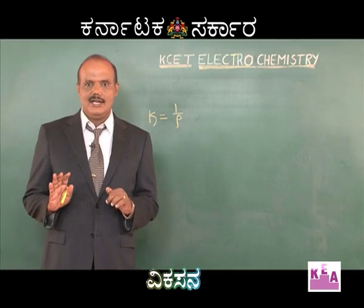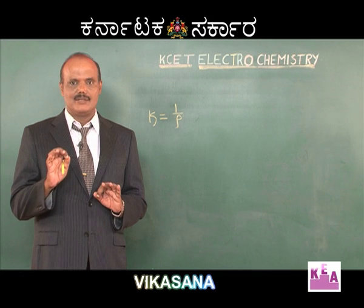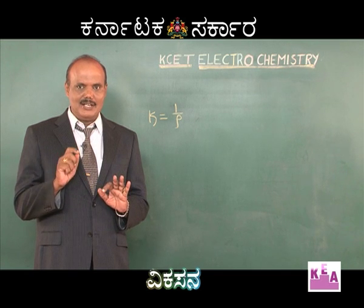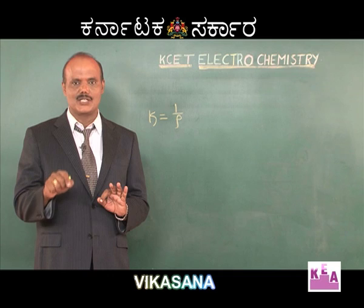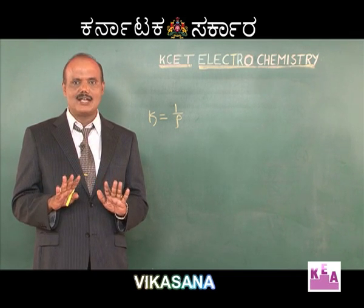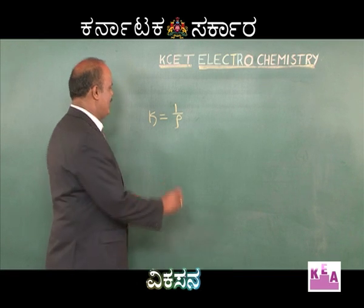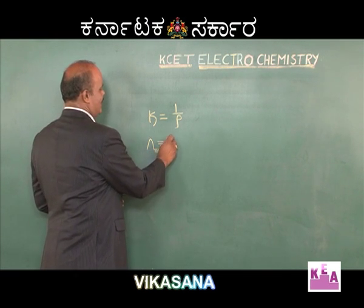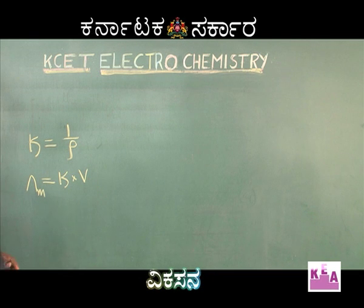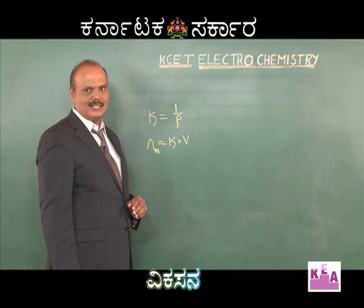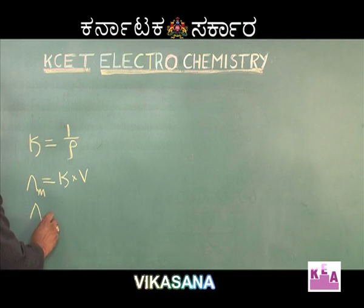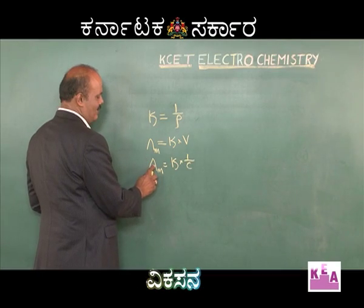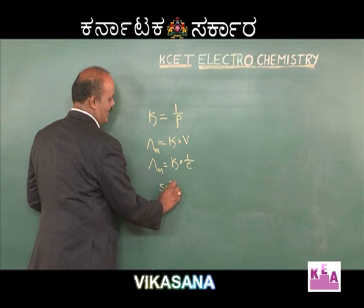Conductivity is measured in terms of molar conductivity. What is molar conductivity? It is the conductivity of ions produced from 1 mole of the electrolytic solution. We have the formula to calculate molar conductivity. Molar conductivity is represented by lambda M. It is the product of conductivity and the volume of the solution containing 1 mole of electrolyte. The reciprocal of concentration gives the volume, so lambda M equals conductivity divided by concentration C.